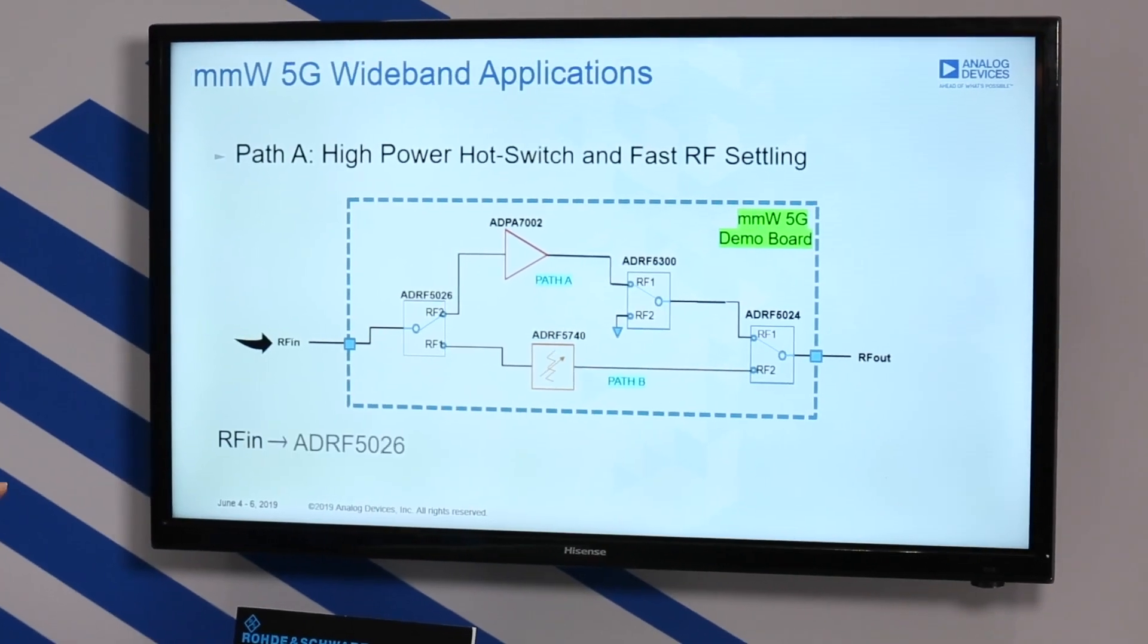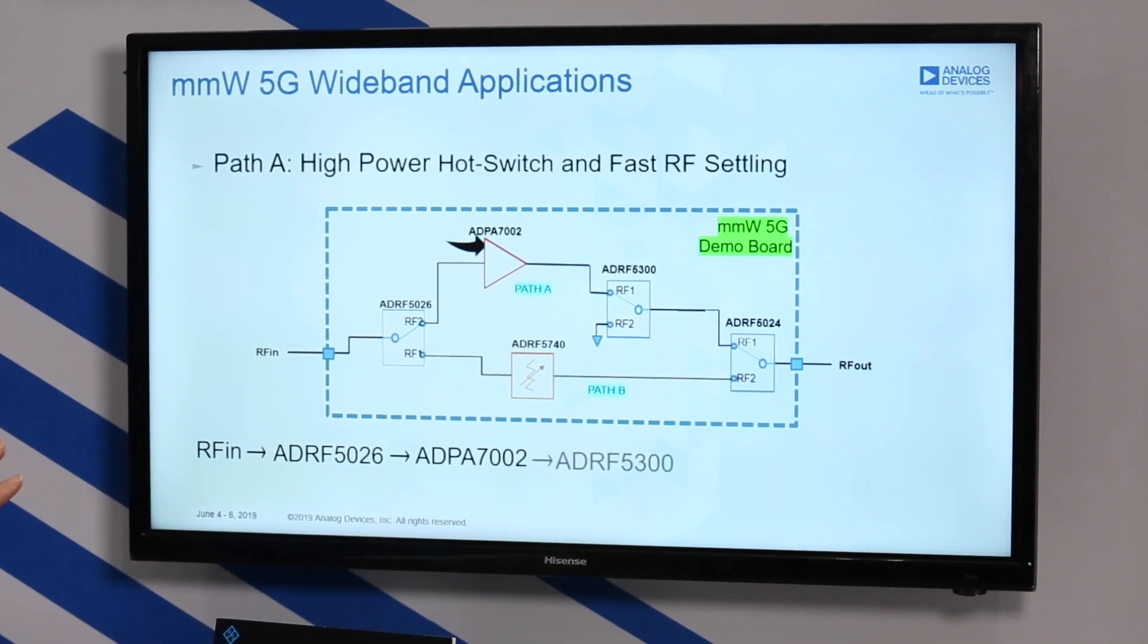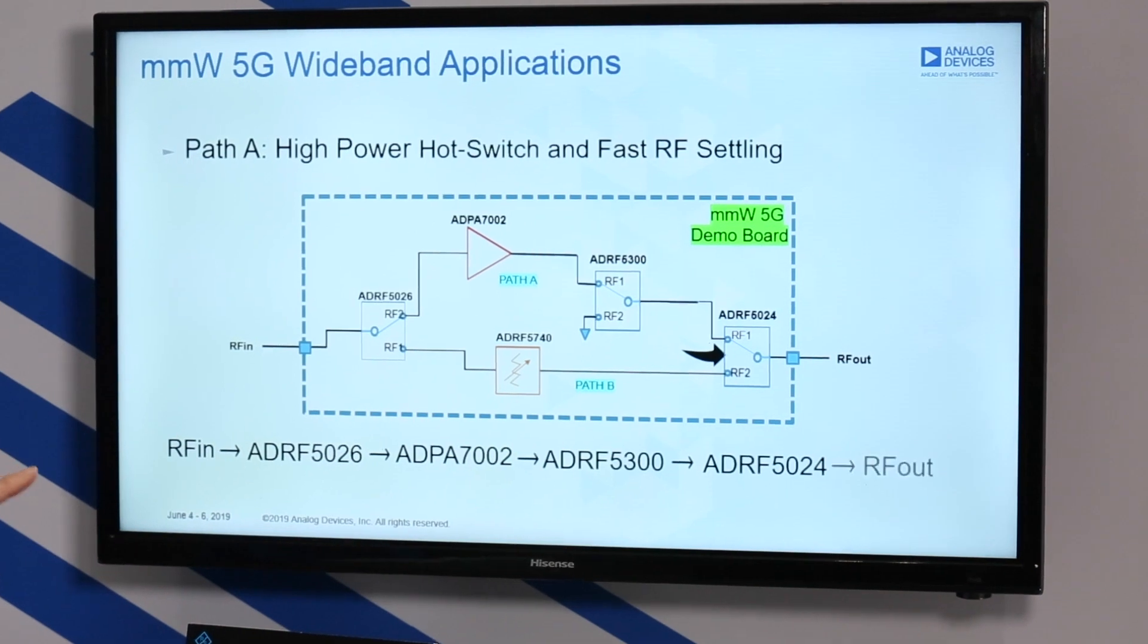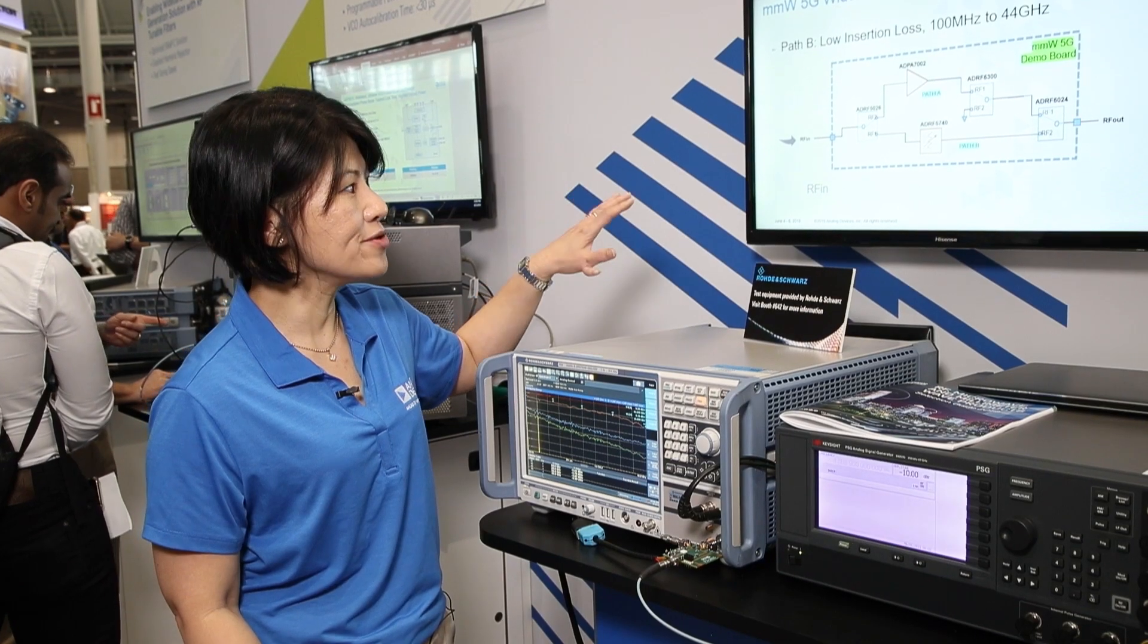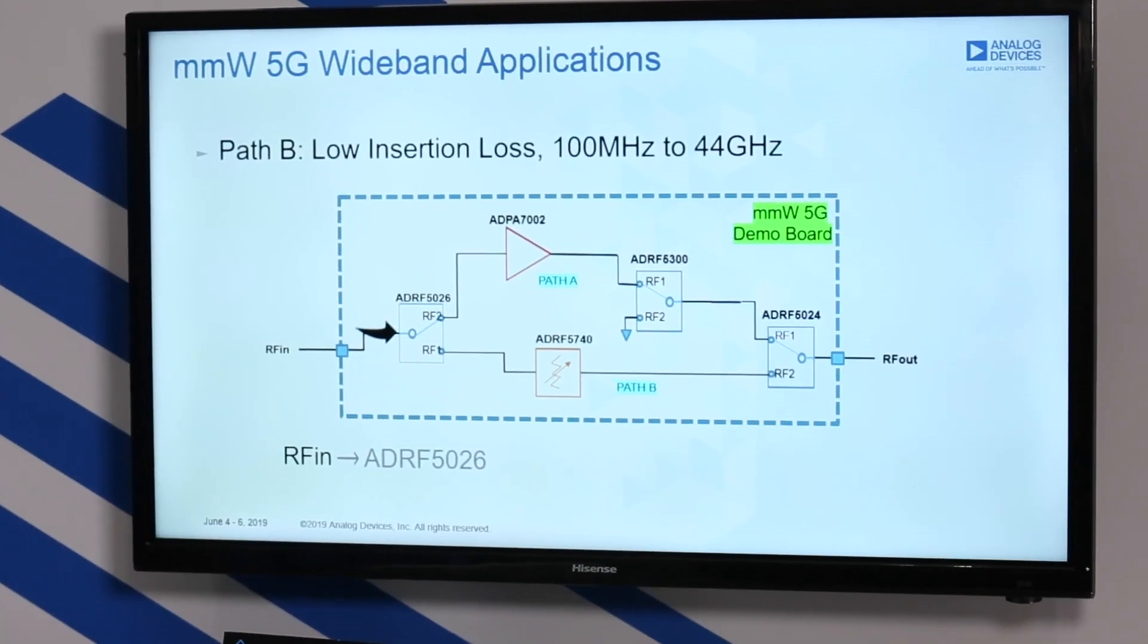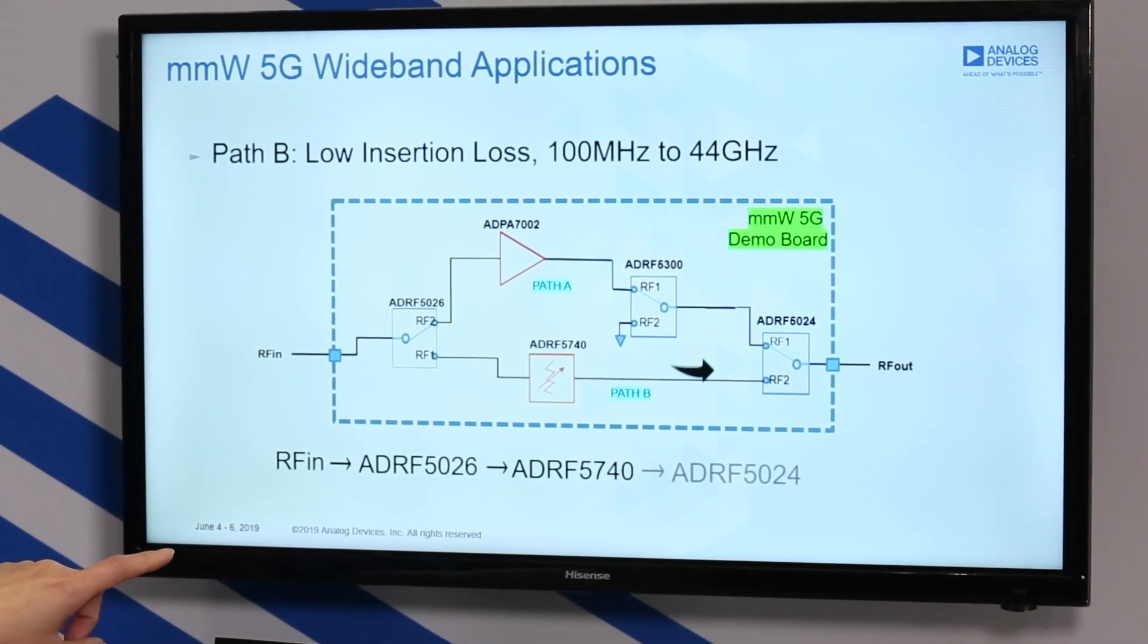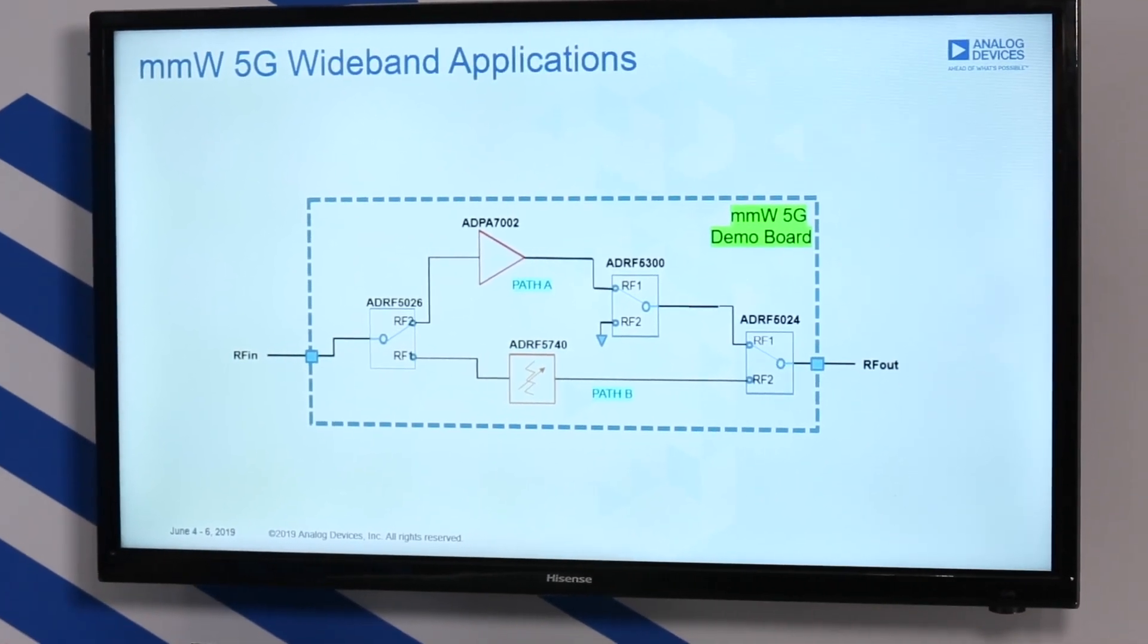The first path shows the high power handling as well as the fast cycling of the ADRF 5300, which is a millimeter wave 5G SBDT. And the second path will go through the SBDT switch into the digital attenuator, showing the ultra low insertion loss of the attenuator.